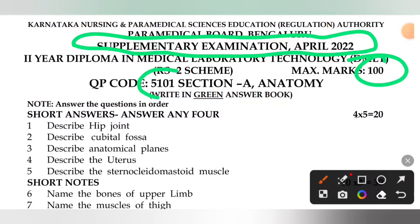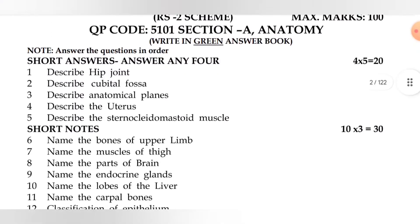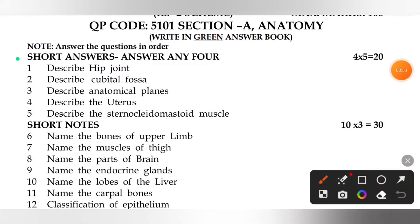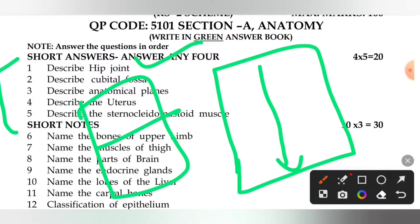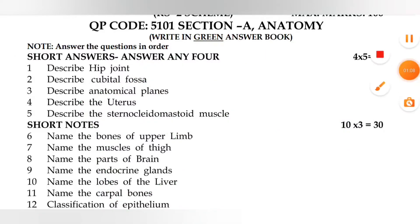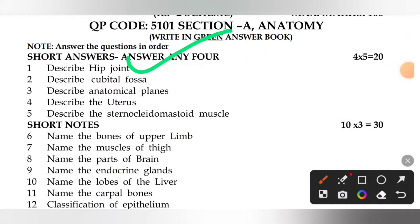This is the anatomy section. If you have 5 questions or 4 questions, you can describe and explain the hip joint.